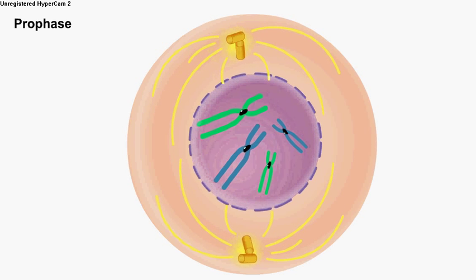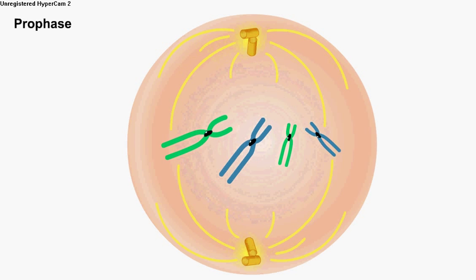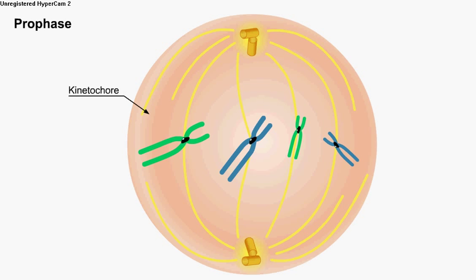The loss of the nuclear envelope allows microtubules that now extend from the centrosomes to attach to the chromosomes. The point of attachment is a structure called the kinetochore. The assembly of microtubules is termed the mitotic spindle.